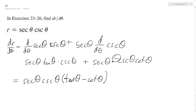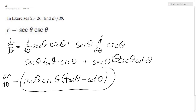That minus comes from the negative in the cosecant derivative. There are different ways you can have this formatted, but factored out like this it works pretty good. So that's our answer — I hope this helped you out, thanks for watching, have a great day.